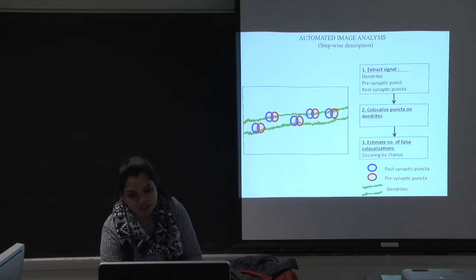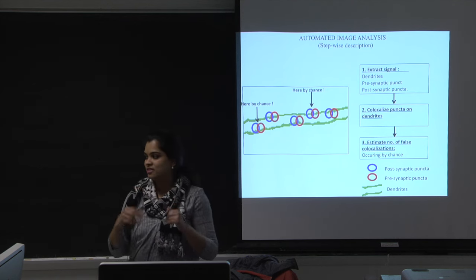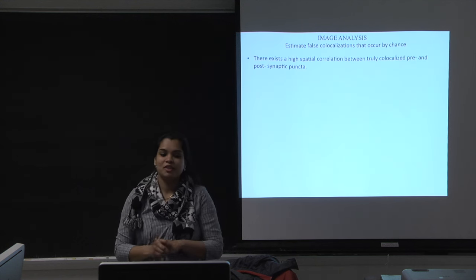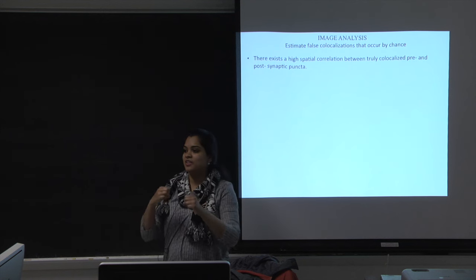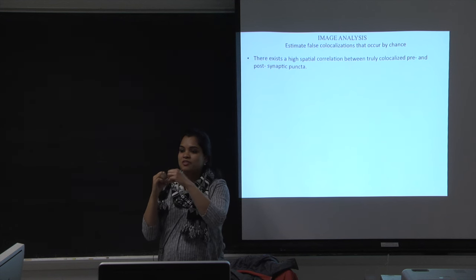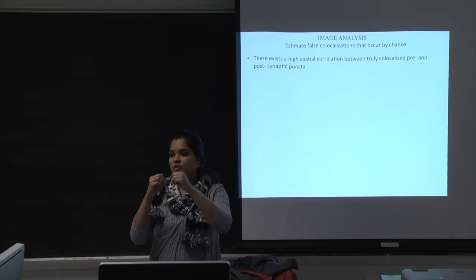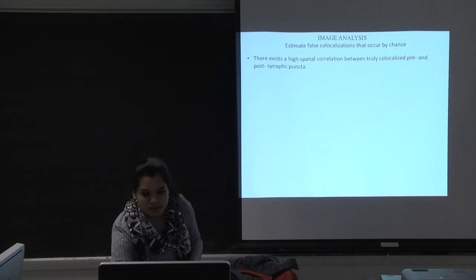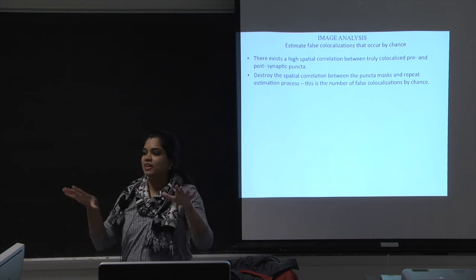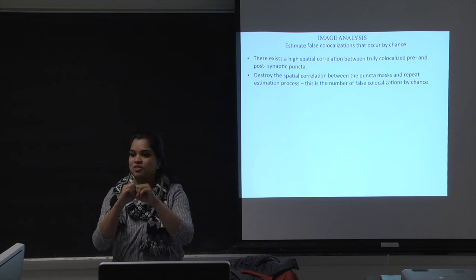Remember, we had one more task: estimating how many of these co-localizations are by chance. To do that, I made use of the high spatial correlation that exists between the pre- and post-synaptic terminals on the dendrites. If there is a potentially real synapse, there's a high correlation between each puncta pair. So if you destroy that spatial correlation and then perform the binary AND procedure, you get an estimate of how many co-localizations happen by chance.